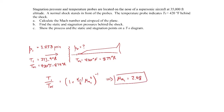All I did was plug in the static temperature T1 and the stagnation temperature T01 — making sure those are absolute temperatures — and then solve for the Mach number. The K value here is 1.4 because we're dealing with air. K of air is 1.4.